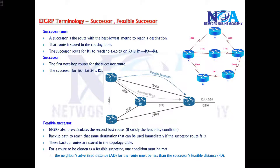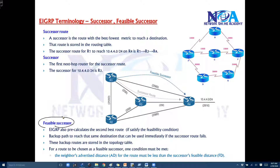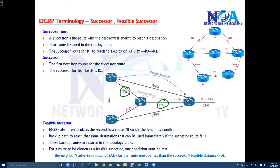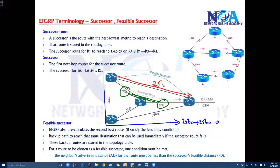We also have something called a feasible successor. The feasible successor is the second best, or the backup route. In this example, from router 1 to reach this network, the successor route has a cost of 256 plus 256, which is 512. The cost on another path is 2560 plus 2560, approximately 5000. Another route costs 2560, and yet another goes even higher at 2560 plus 256. So 512 is the best, and the next best route — 2560 — is the feasible successor.